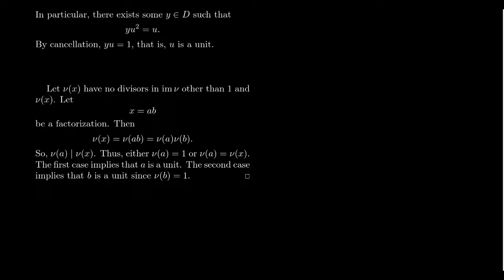So since A or B has to be a unit, this would imply that X is an irreducible element inside the domain. So in particular, if the norm of a number from this domain, from this Euclidean domain, is a rational prime, then that guarantees that it's going to be irreducible because primes don't have any factors whatsoever, so they can't be in the image because they don't exist.